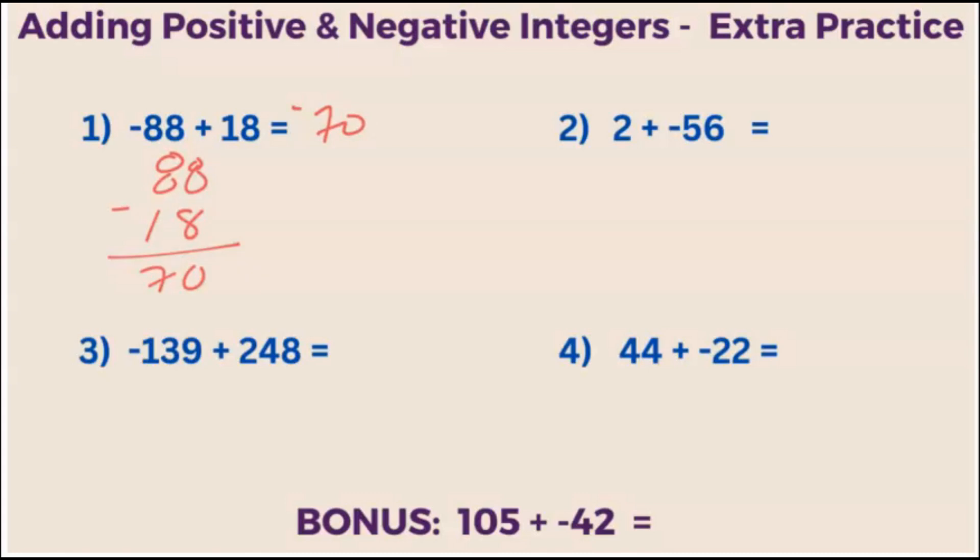What about positive 2 plus negative 56? Again, we take the absolute values and subtract. And we will set it up as a regular subtraction problem. So the larger number goes on top. 56 minus 2 is 54.